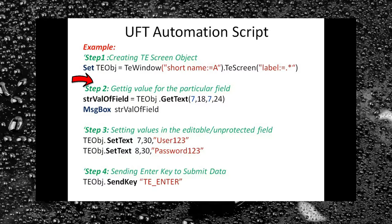In step 2, I am retrieving text from row number 7 between columns 18 to 24 and displaying the output in a message box. In step 3, I am setting the username and password. In step 4, I am pressing the Enter key.